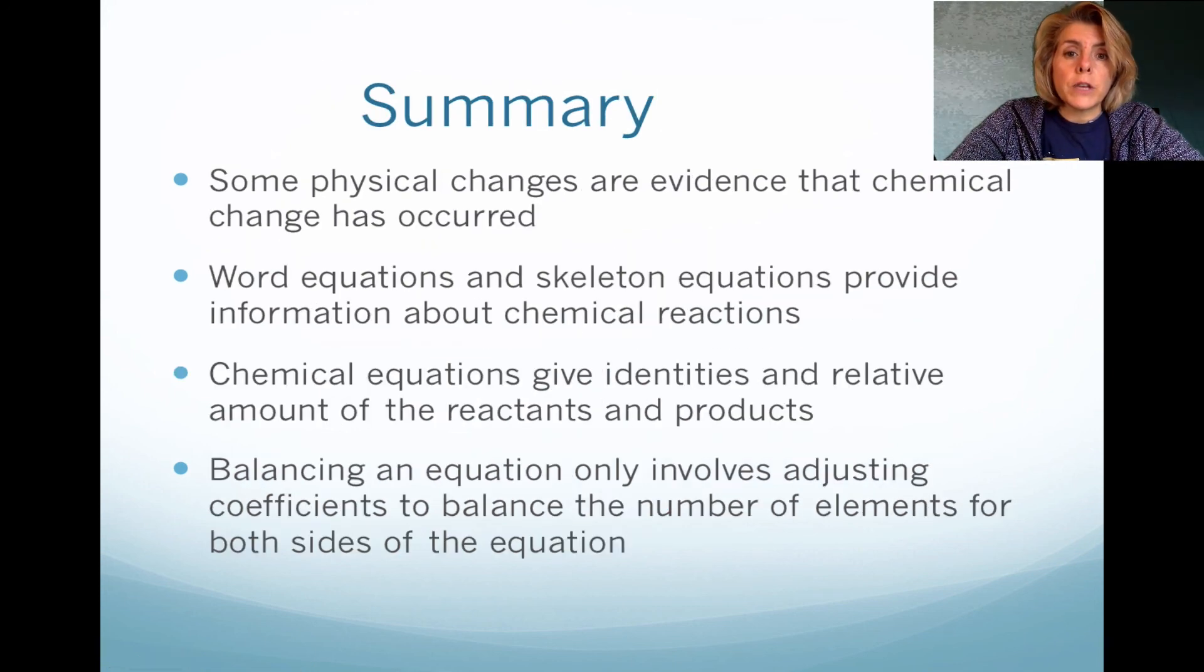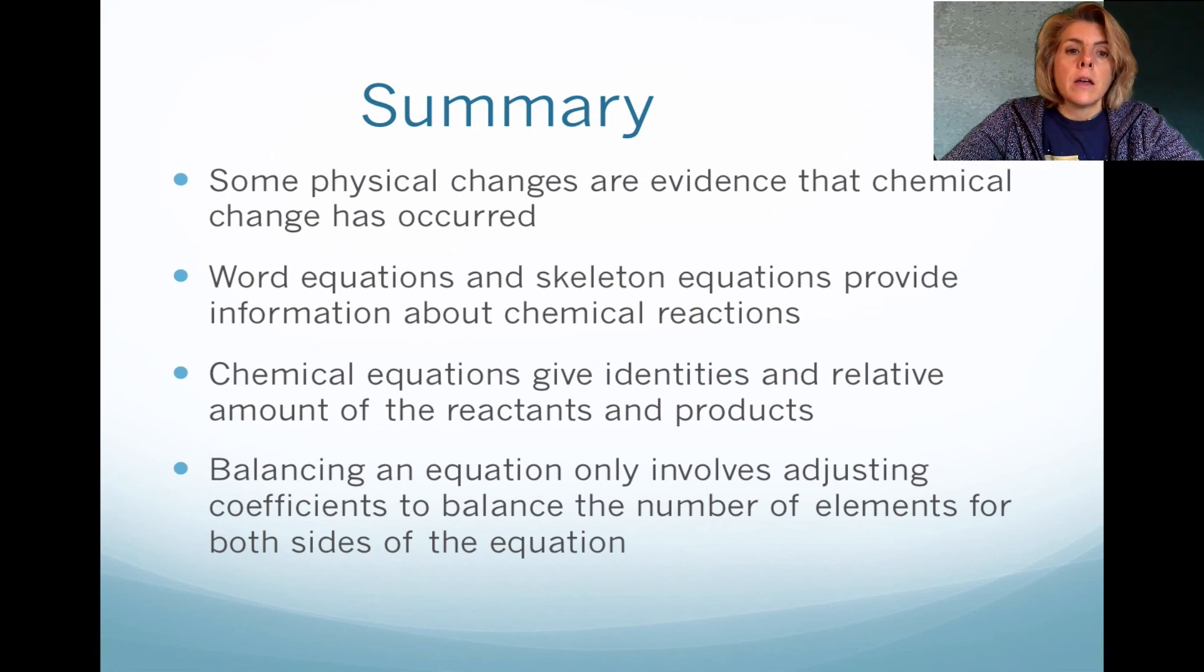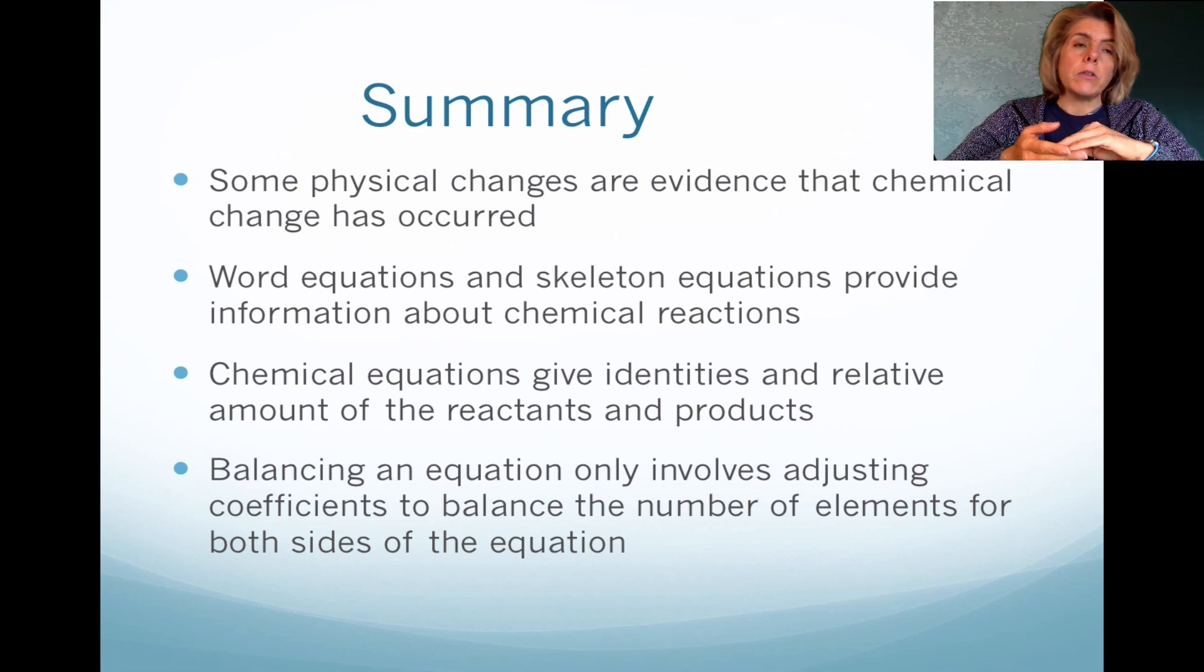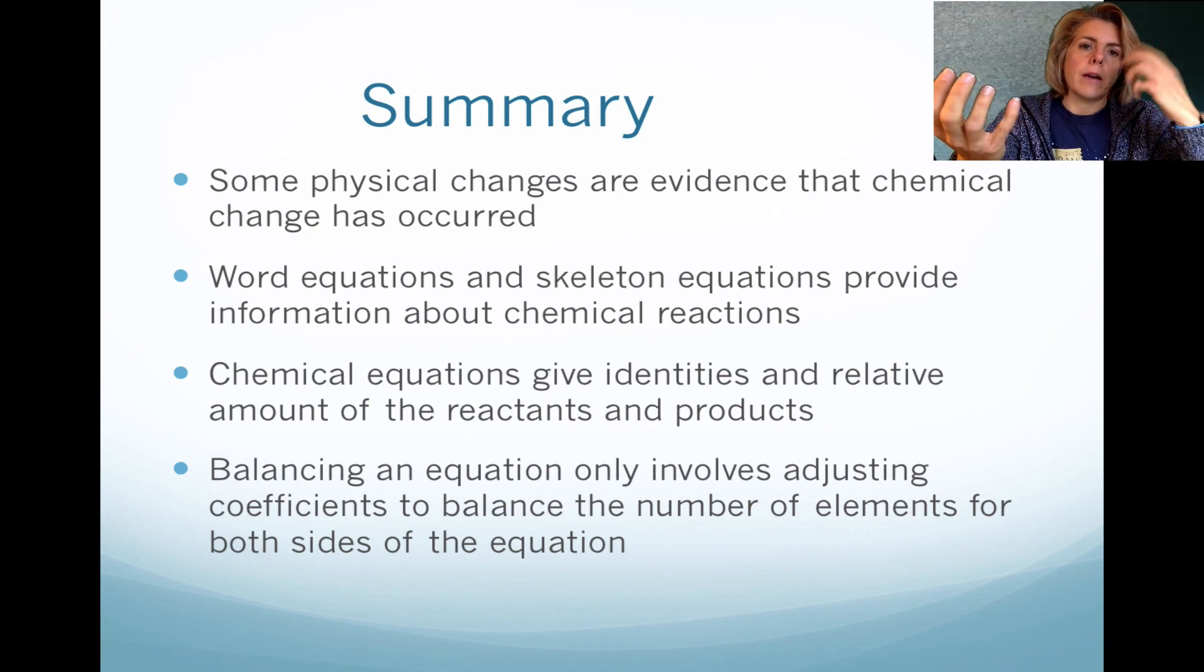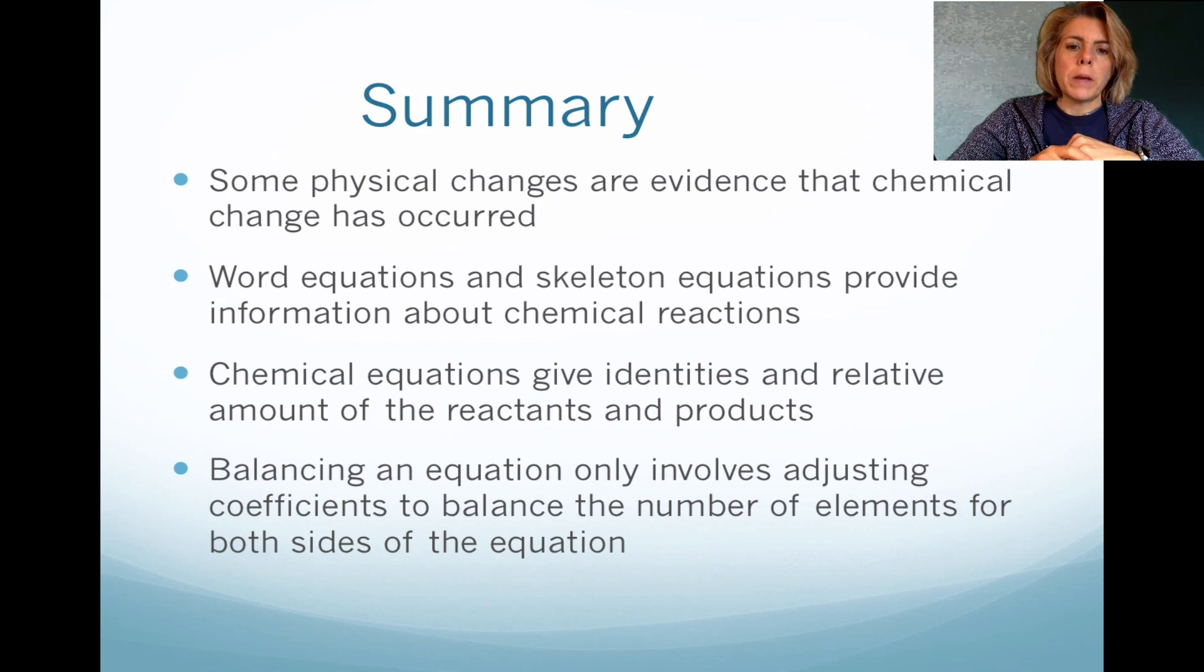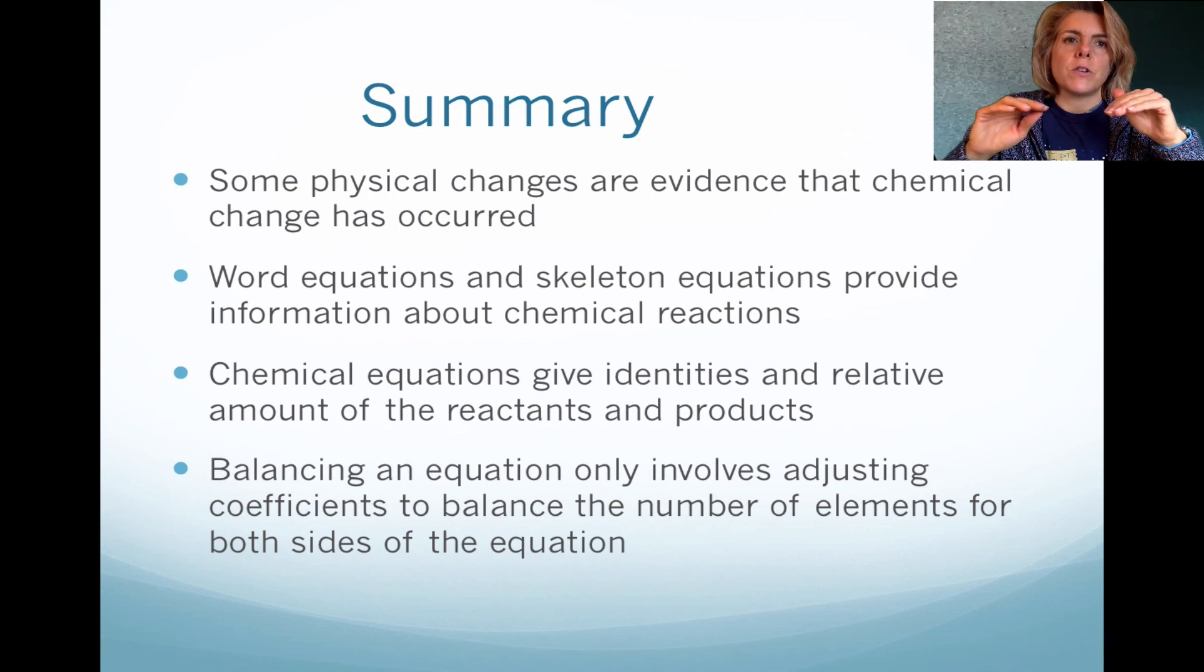So in summary, physical changes typically can be evidence that chemical changes have occurred. That means like formation of precipitate or evolution of a gas. Now, in equations, we look at the skeleton equation, and the skeleton equation just tells us what substances are reacting and forming products. But a chemical equation, we need to know relative amounts, and the amount of reactants has to equal the amount of product. So balancing equations, we add coefficients. We never, ever, ever change the subscripts. We must add coefficients.